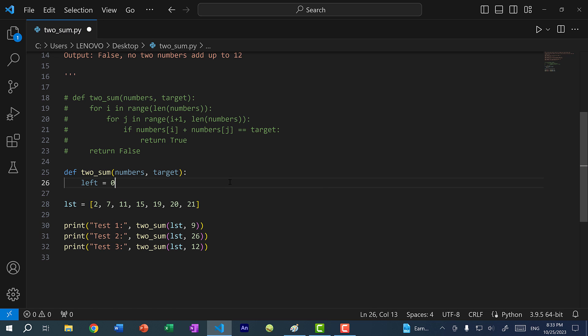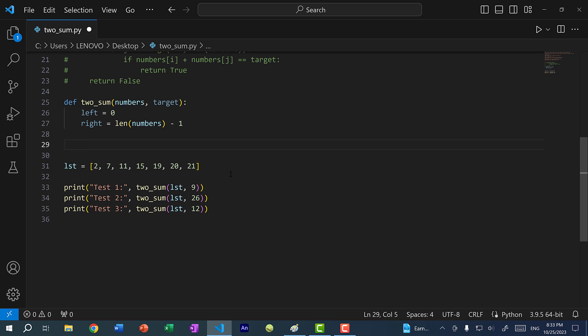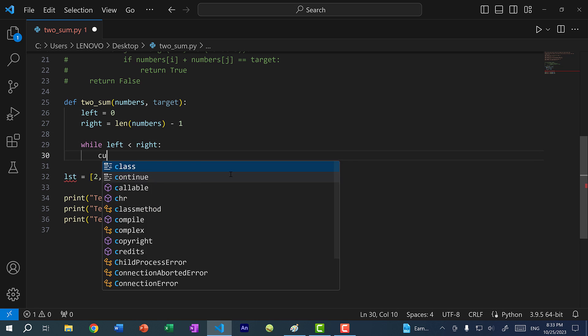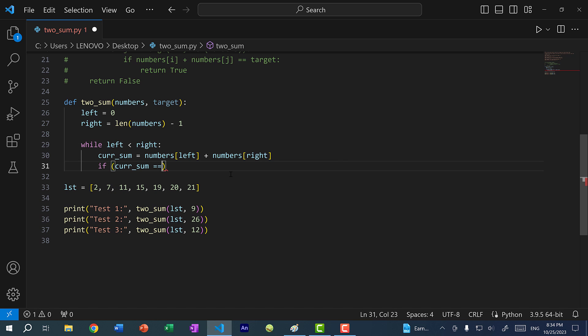Left is equal to 0, and right is equal to length of numbers minus 1. Then here I'm going to create a while loop. So while left is less than right, this means that they haven't crossed path yet. cur_sum is equal to numbers[left] plus numbers[right].